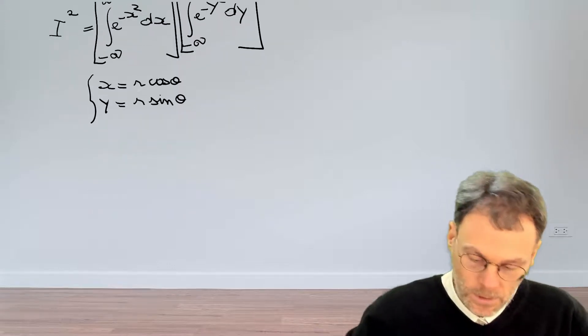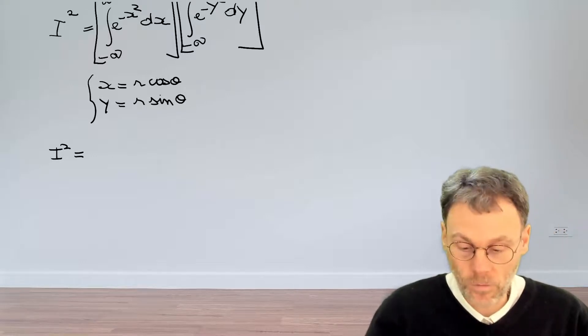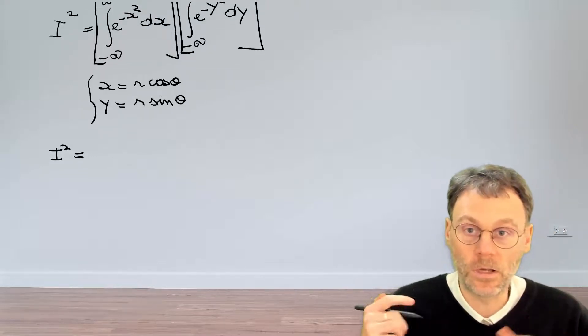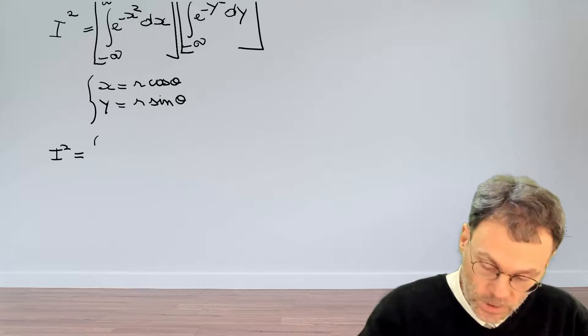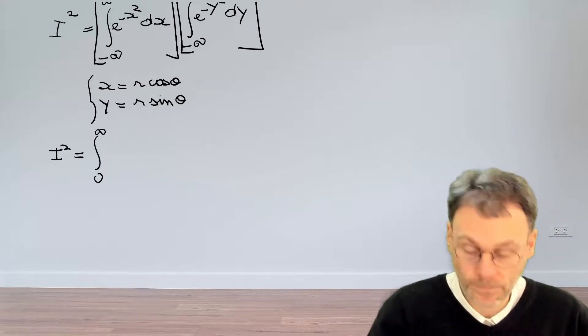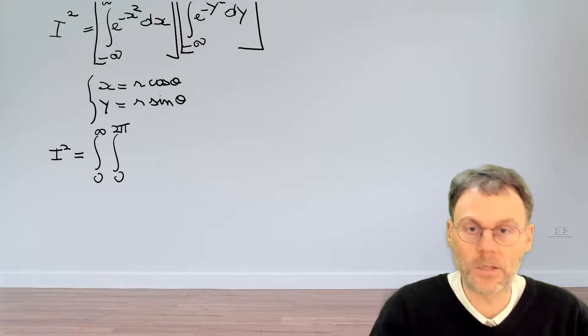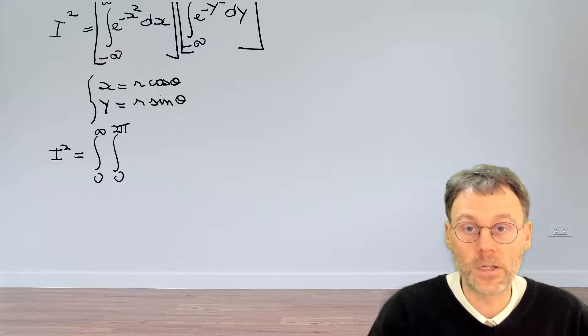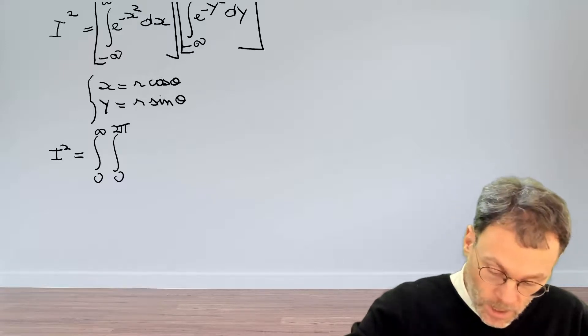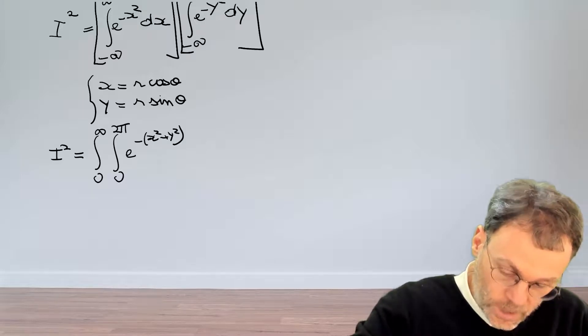Let's continue. The square of the integral now becomes an integral not over the xy plane, but over the r theta plane. So with respect to r, it will be an integral from 0 to infinity. And theta will go from 0 to 2 pi. So that's a different way of covering the entire plane. So then we have exponential minus x squared here plus y squared.